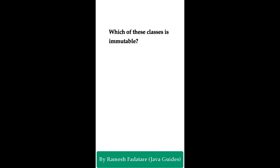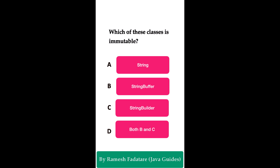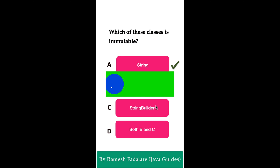Which of these classes is immutable in Java? Option A: String. Option B: StringBuffer. Option C: StringBuilder. Option D: both B and C. The correct answer is option A — String. In Java, String objects are immutable, meaning once a String object is created its value cannot be changed. Any modification results in the creation of a new String object. On the other hand, StringBuffer and StringBuilder are mutable — once you create their objects you can change their values.